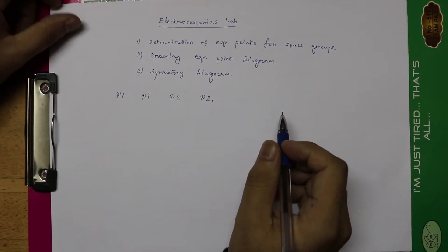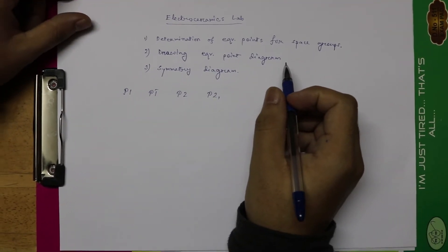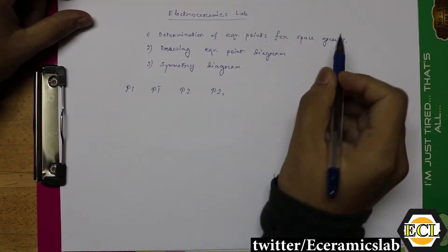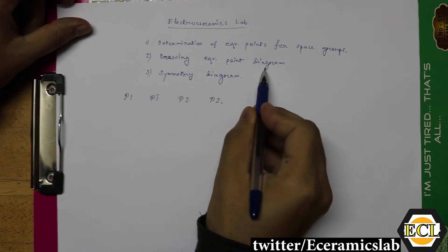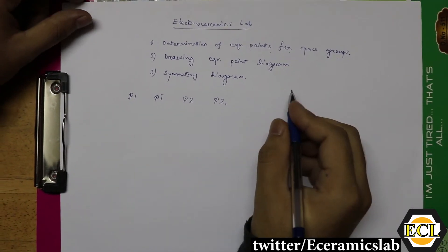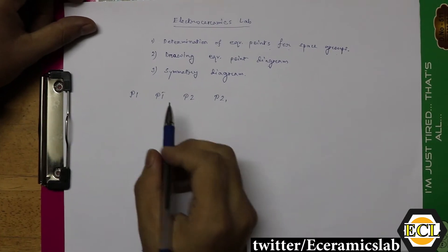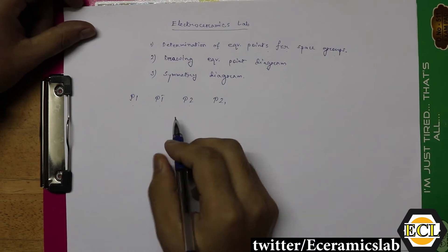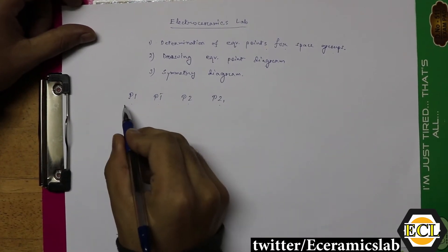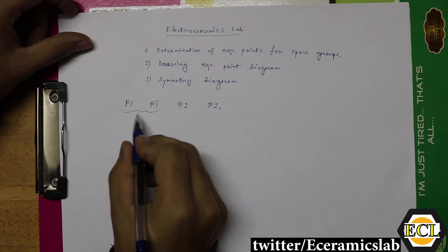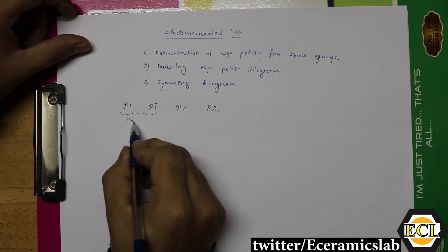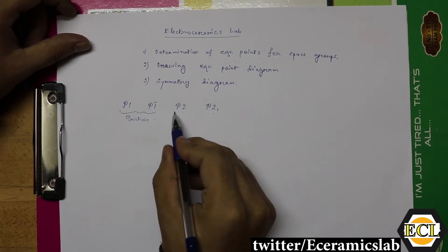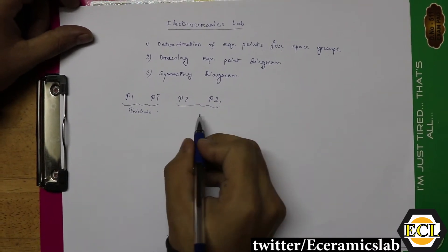Hello friends, welcome to our electro ceramics lab. Today we will be discussing the determination of equivalent points for space groups, drawing equivalent point diagrams and symmetry diagrams of the corresponding space group. The main focus will be on P1, P1-bar, P2, and P21 space groups. P1 and P1-bar belong to the triclinic system, and P2 and P21 belong to the monoclinic system.